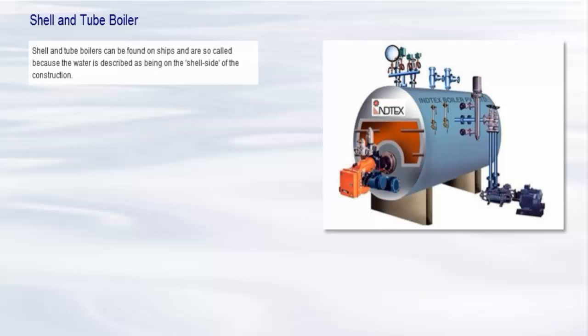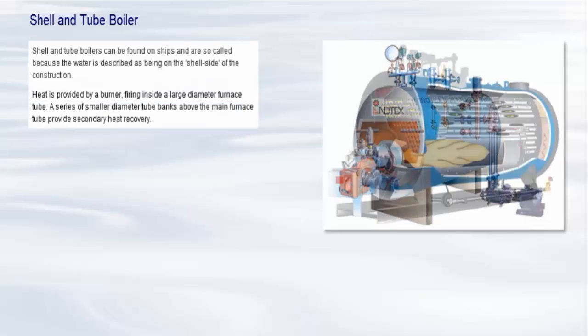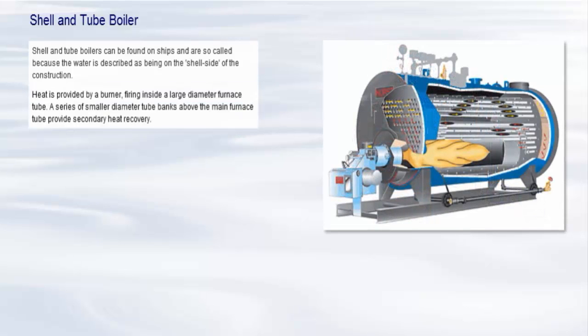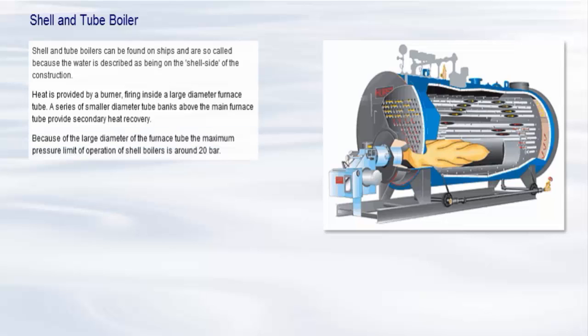Shell and tube boilers can be found on ships and are so called because the water is described as being on the shell side of the construction. Heat is provided by a burner firing inside a large diameter furnace tube. A series of smaller diameter tube banks above the main furnace tube provides secondary heat recovery. Because of the large diameter of the furnace tube, the maximum pressure limit of operation of shell boilers is around 20 bar.